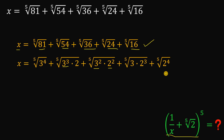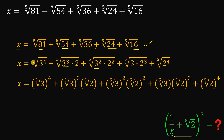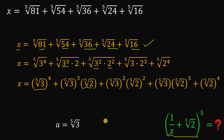Using laws of exponents, we can rewrite the radicands — from p-th root of 3 to the fourth power, all the way down to p-th root of 2 to the fourth power. Notice we have a lot of p-th root of 3 and p-th root of 2. To simplify, let a equal p-th root of 3 and b equal p-th root of 2, then replace all occurrences with a and b respectively.